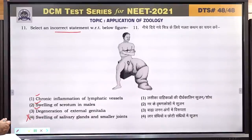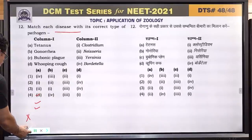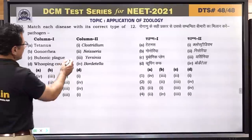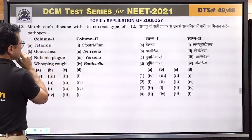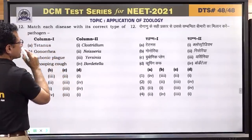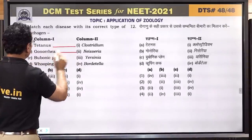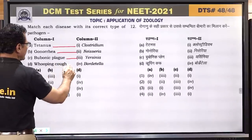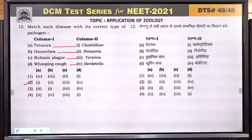Question number 12: match the disease with bacteria. Tetanus is caused by Clostridium tetani. Gonorrhea is caused by Neisseria gonorrhoeae. Plague is caused by Yersinia pestis. Whooping cough is caused by Bordetella pertussis. So matching is 1, 2, 3, 4 — all correct.